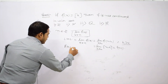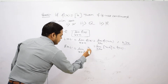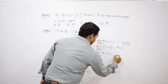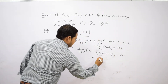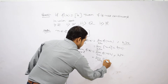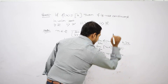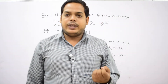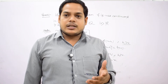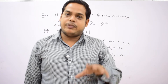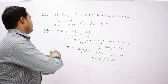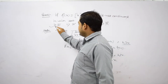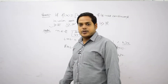Similarly, RHL = limit as x tends to n⁺ of f(x) = limit as h→0 of ⌊n + h⌋ = n. So LHL ≠ RHL, meaning the limit does not exist. If the limit does not exist, we cannot discuss continuity — continuity is discussed only after the limit exists. Therefore, the greatest integer function is not continuous for the set of integers, and also for the set of natural numbers.